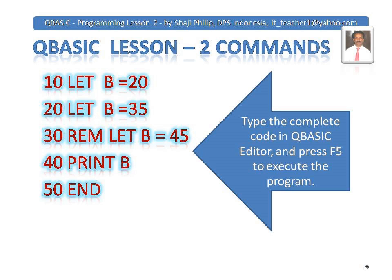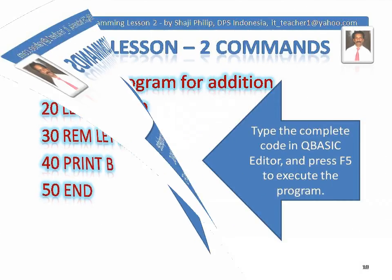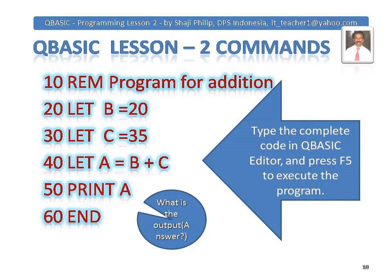You can try this program. For executing a program, after typing it in the QBasic editor, press F5 — F5 is the shortcut for running the program. Here is another short program: REM — program for addition. This program adds two numbers. In statement 20: LET b = 20. In statement 30: LET c = 35. In statement 40: LET a = b + c. Then PRINT a. The values of b and c will be added and stored in a, and a will be printed. The answer will be 55. Type this entire code and press F5 to see the output.